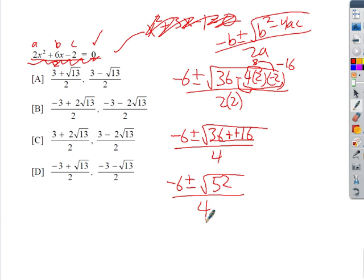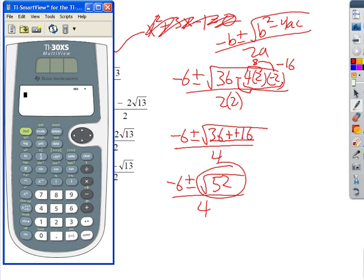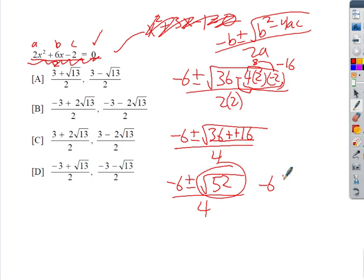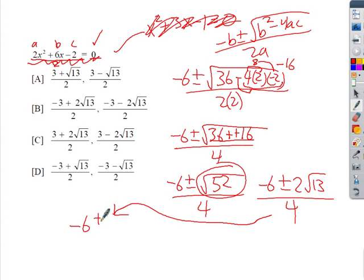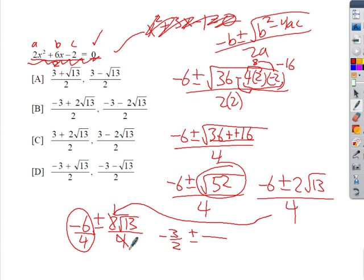We can simplify √52: using a calculator, √52 = 2√13. So we have (−6 ± 2√13) / 4. Since the numerator has two parts, we can split the fraction: −6/4 ± (2√13)/4, which reduces to −3/2 ± (√13)/2. Combining back over one denominator gives us (−3 ± √13) / 2. If you had factored out the GCF of 2 first, you would have arrived at this answer directly.